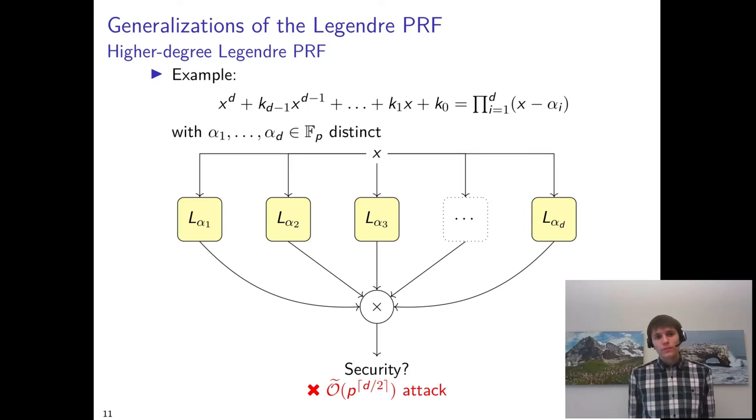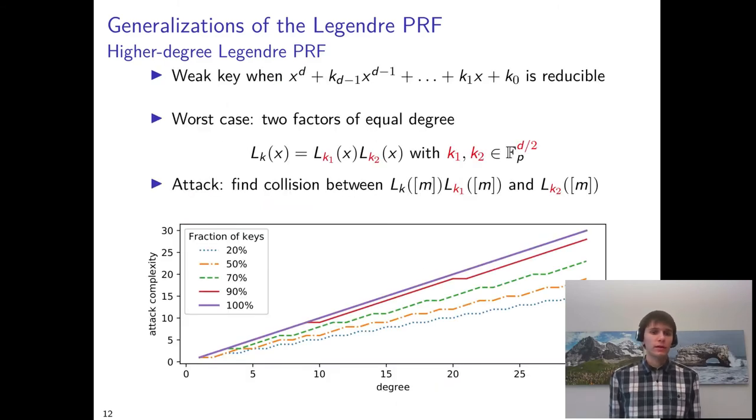In general, any key so that the corresponding polynomial is reducible could be called a weak key. But the degree to which it is weak depends on the structure of the factorization. In the worst case, we have two factors of equal degree. And in that case, there's a collision attack that we can apply.